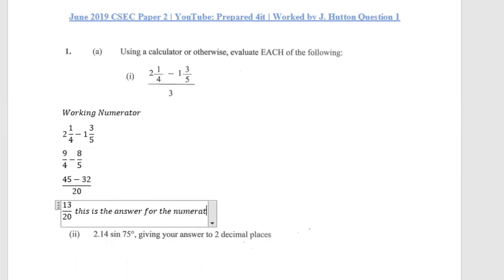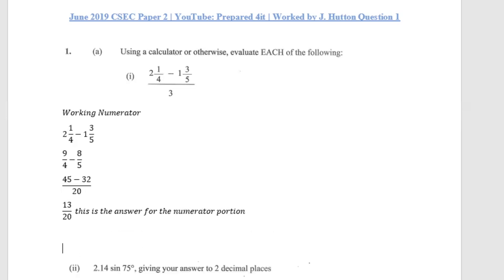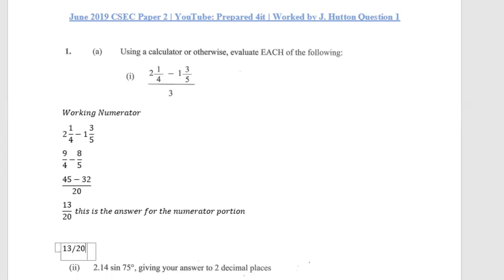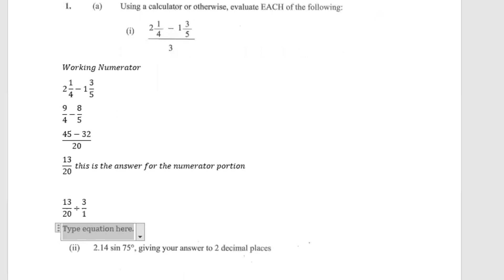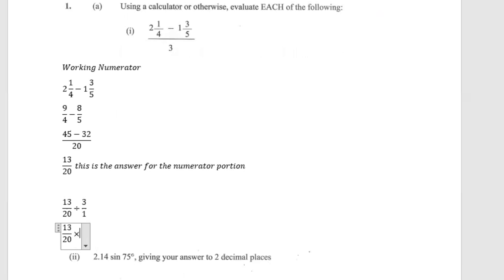Going back to the original fraction, the numerator portion is divided by three. Since we know the numerator is 13 over 20, we continue: 13 over 20 divided by 3, which is the same as 3 over 1. We never divide fractions — we always change division to multiplication and flip the fraction that follows, giving us 13 over 20 multiplied by 1 over 3.